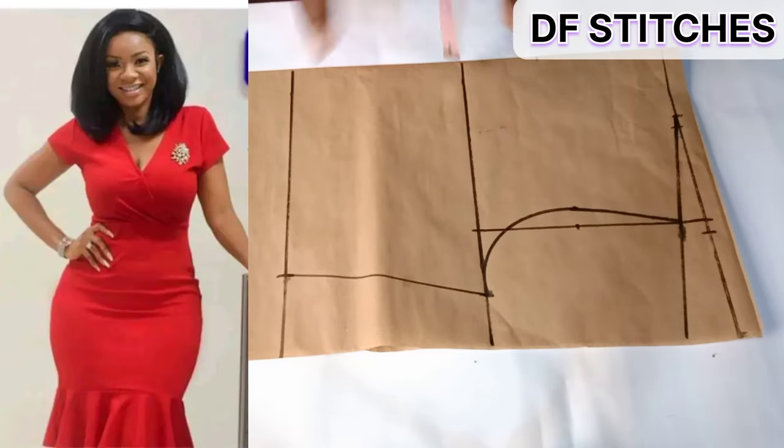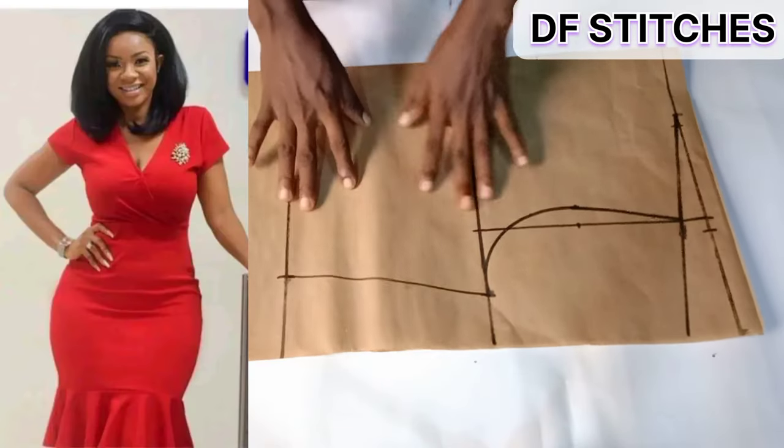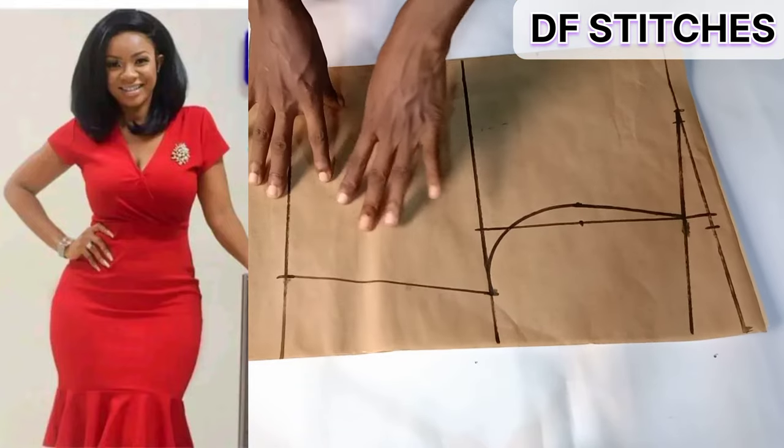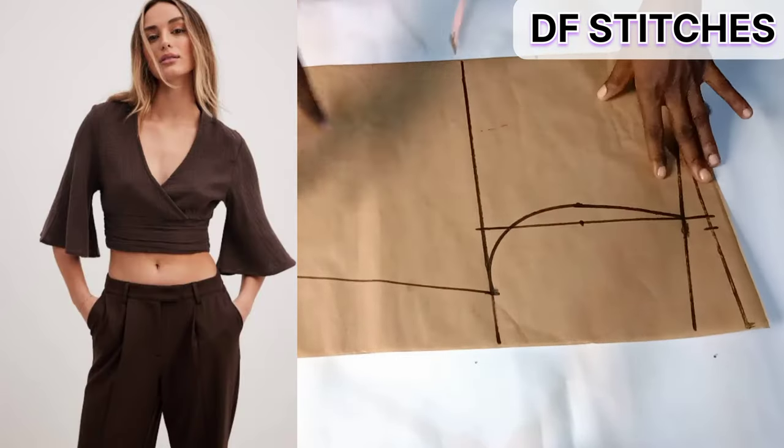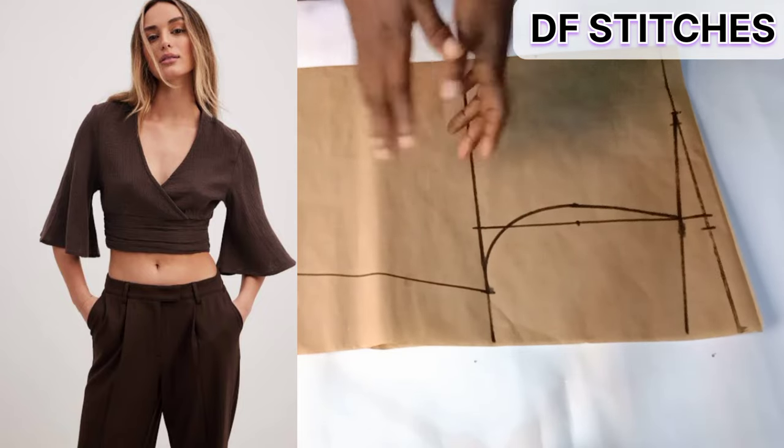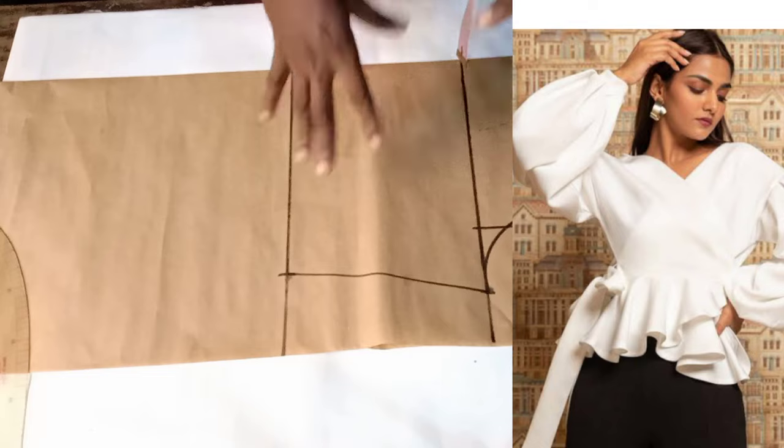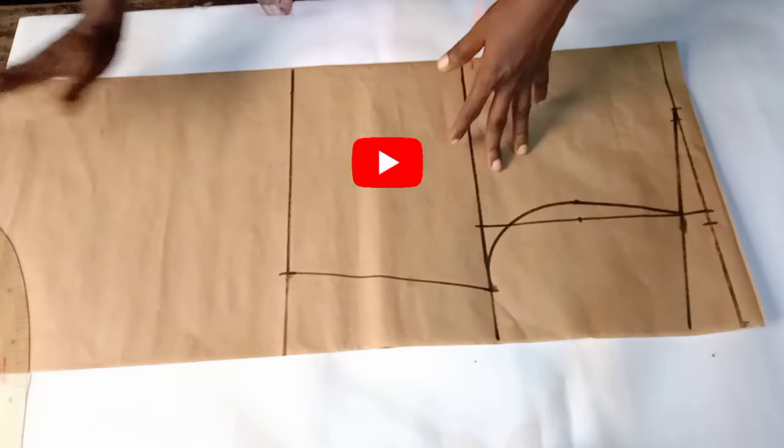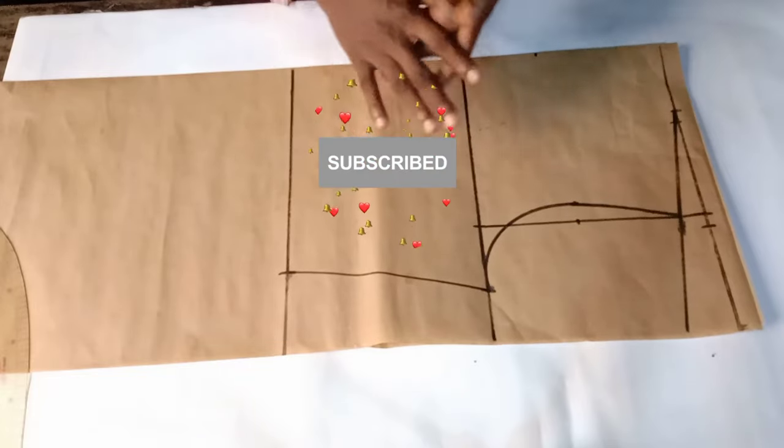Hi guys, welcome back to my channel. Today's tutorial will be on how to cut an overlap dress, so it is only the upper parts that will overlap on each other at the front side. The lower part will be a normal skirt.